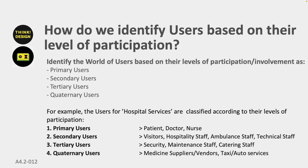You can also locate users based on their level of participation. You can have primary users — they are very important. For example, if you are designing a toy for children, children become the primary users. Parents and siblings who play with them become secondary users. The salesman who sells the toy becomes the third or fourth user. So the level of participation makes them primary, secondary, or tertiary users.